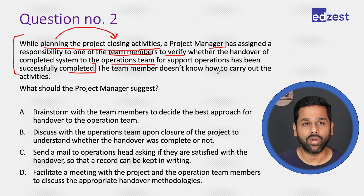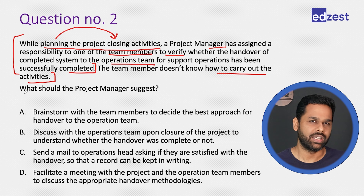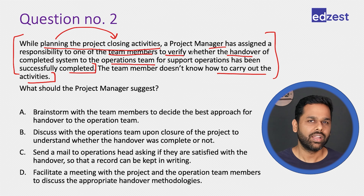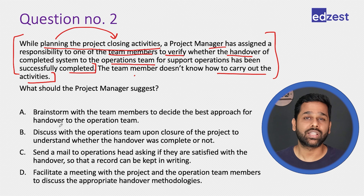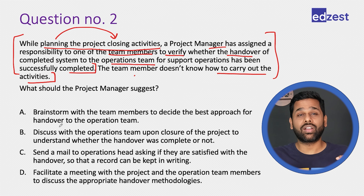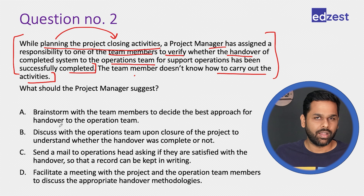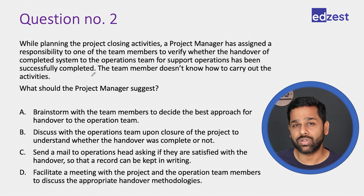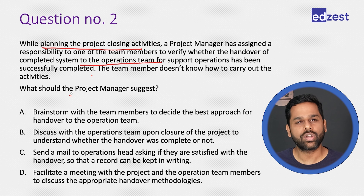The team member doesn't know how to carry out the activities. In a previous task we discussed something similar about knowledge transfer, where the answer was meeting over brainstorming because at the closure stage we need to verify using a proper technique. Now the question is a little different: when the team member does not know how to carry out these verification activities, and we are planning the project closing activities, what should the project manager suggest?